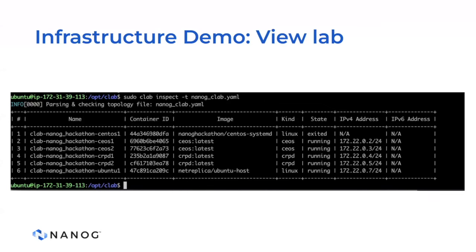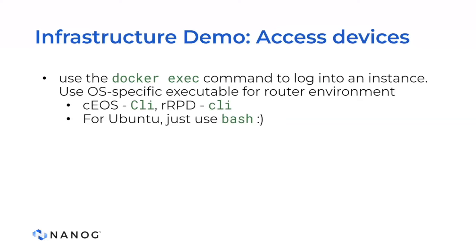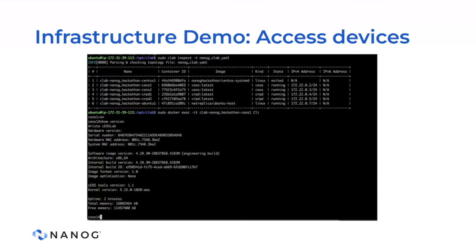The Docker exec command is my personally preferred mechanism for accessing these containers. The trick with Docker exec is that you have to give it a binary to run — you have to give it what to exec. CEOS and CRPD are the two main containerized network OSes we run. CEOS is Arista, CRPD is Juniper, and they both have different command-line executables. You'll notice they're almost the same, except Arista capitalizes the word CLI. If you're logging into one of the Unix instances, just use bash as your exec command. Run Docker exec with -it for interactive, the name of the container, and then the CLI. Make sure you go to enable in CEOS, and then it should look exactly like a real router.